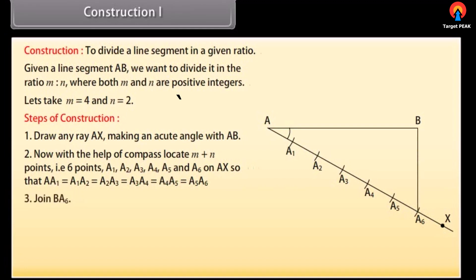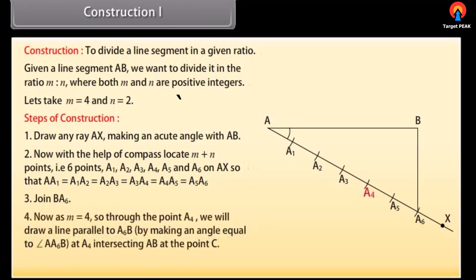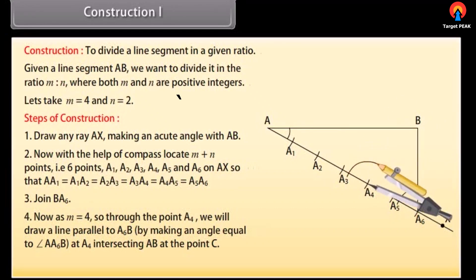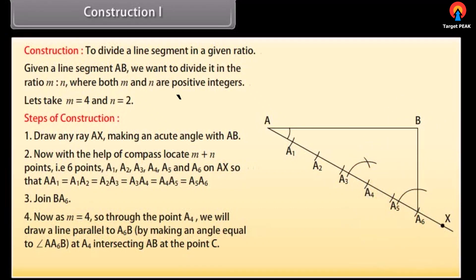Join BA6. Now, since M is equal to 4, through the point A4 we will draw a line parallel to A6B by making an angle equal to angle AA6B at A4, intersecting AB at the point C.